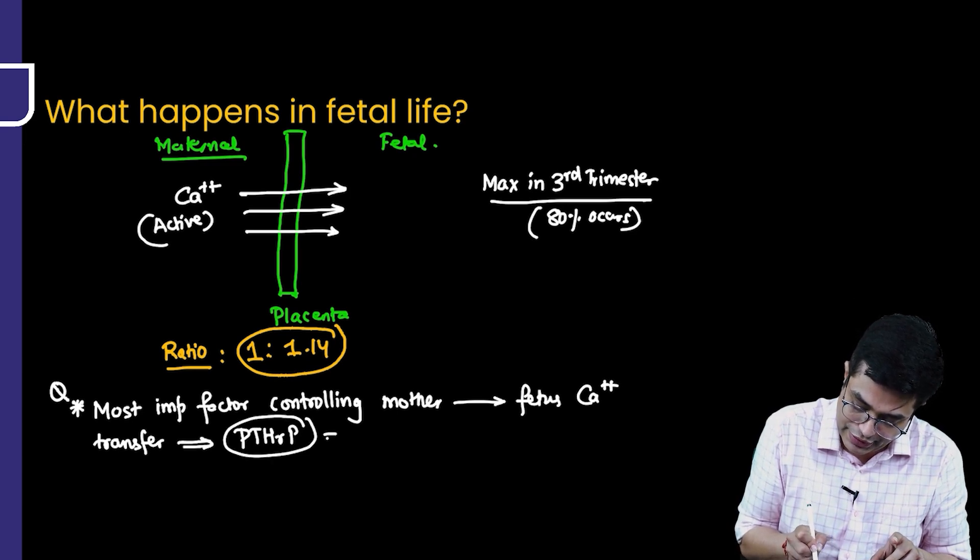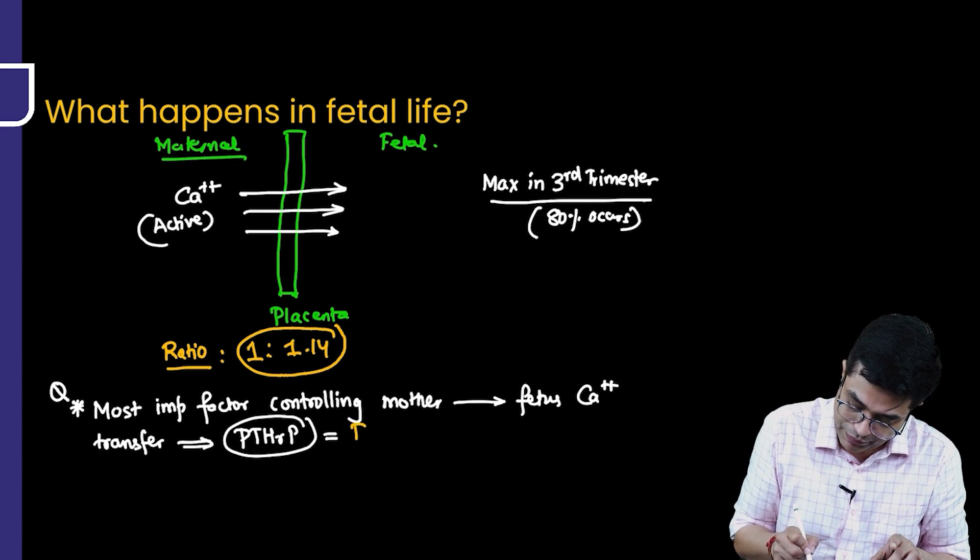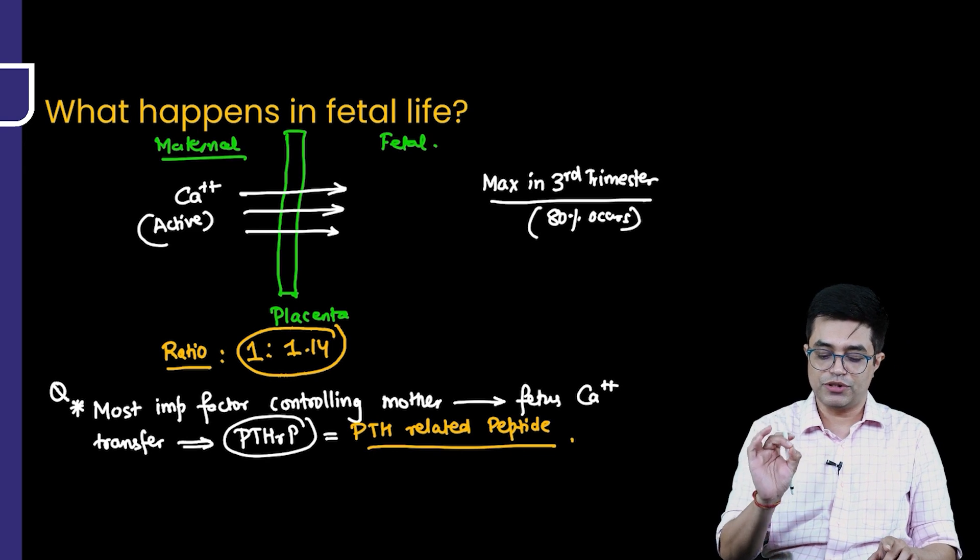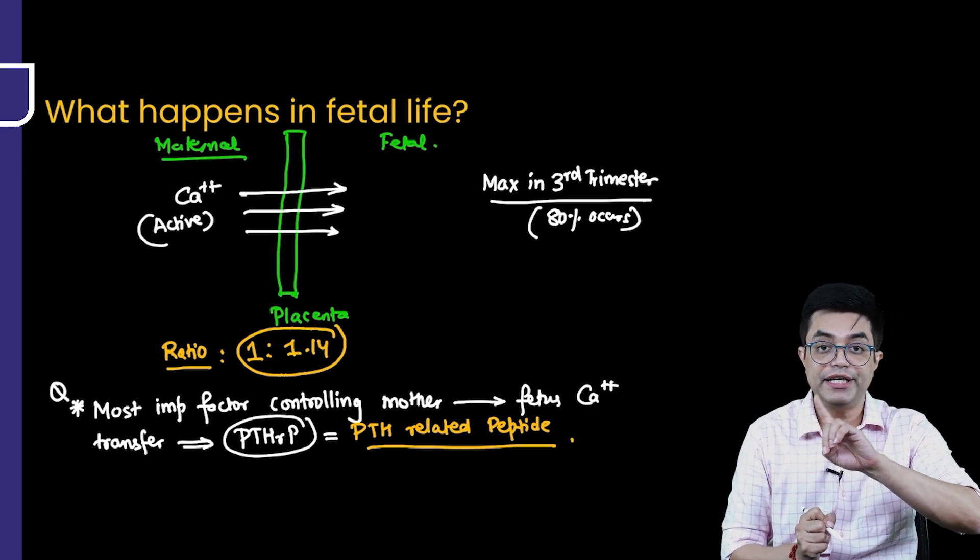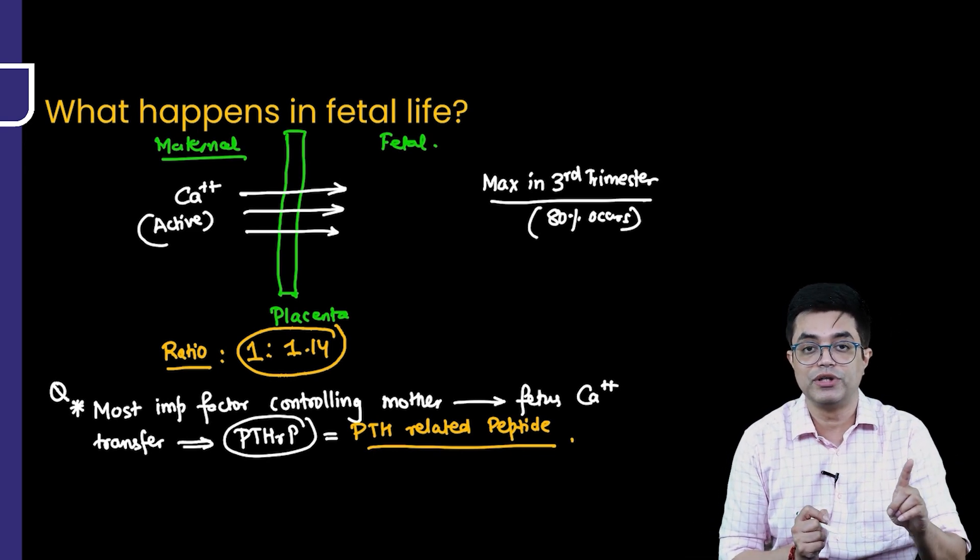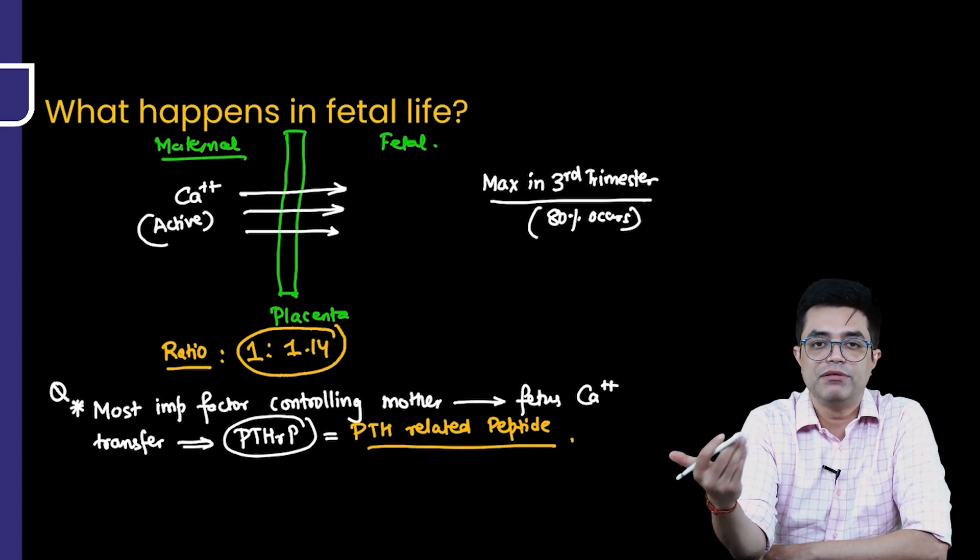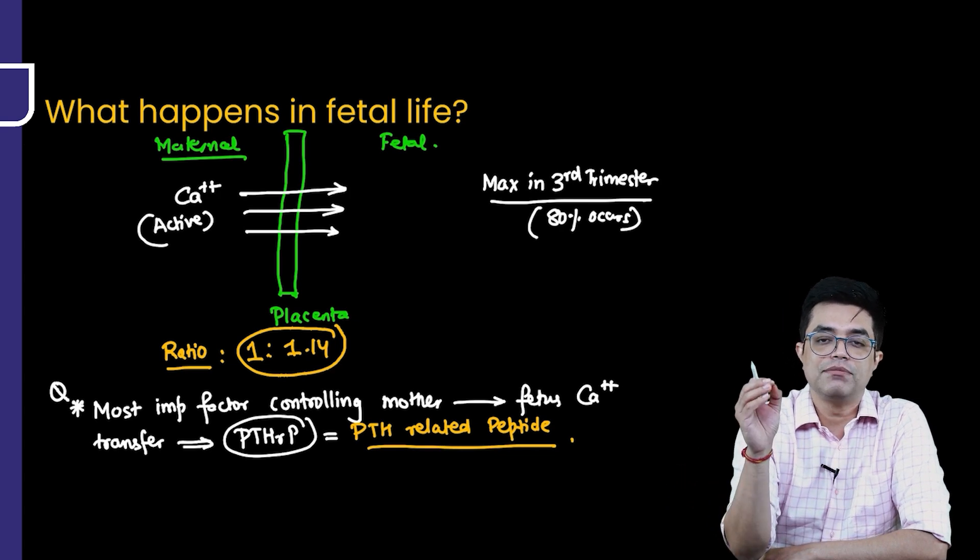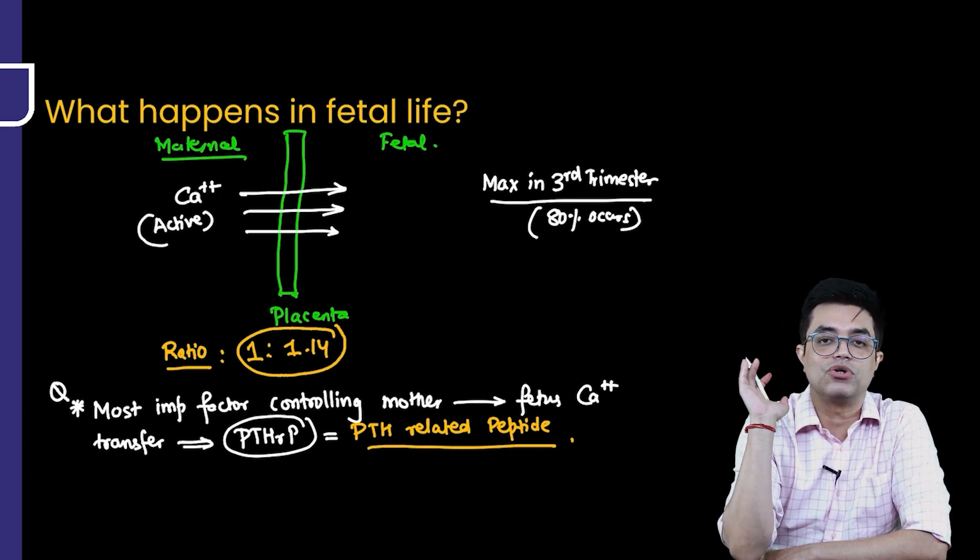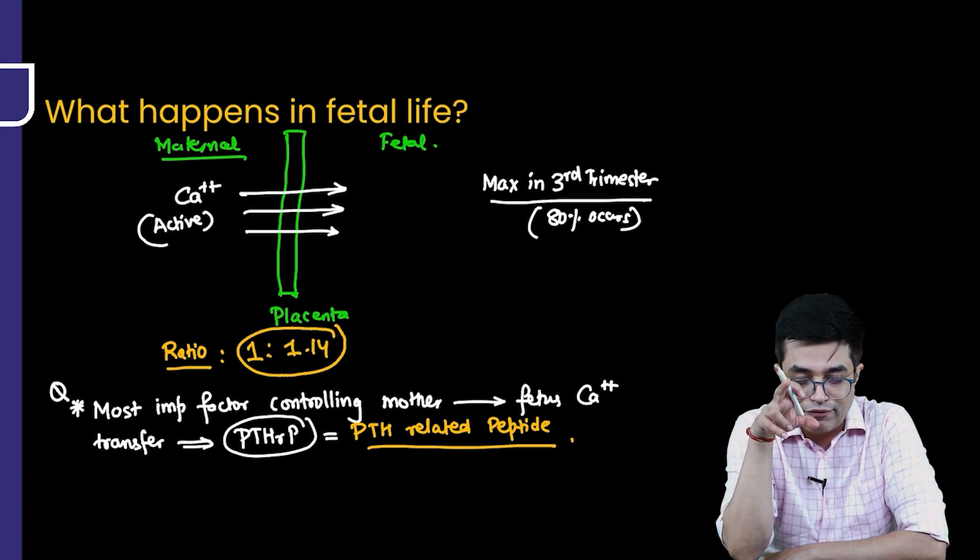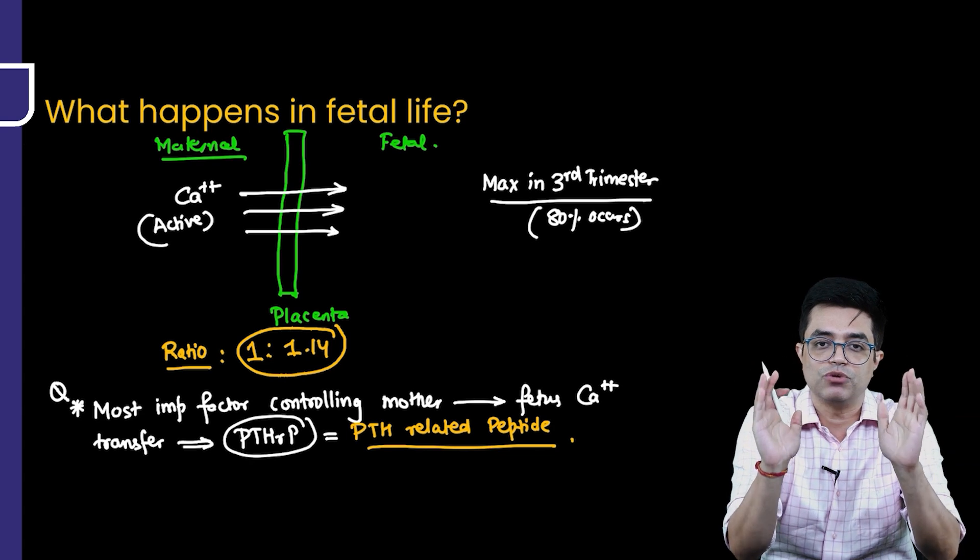What is PTHRP? It stands for parathyroid hormone related peptide. So it is an analog, it is a related peptide which is produced from the parathyroid gland which is responsible for this. So remember it is not PTH, it is not the parathyroid hormone, it is the PTHRP. PTHRP is more famous or I would say infamous for causing the hypercalcemia in malignant disorders. But PTHRP is also a useful thing. It is involved in mother to child active transport.